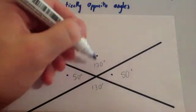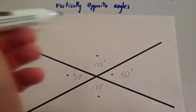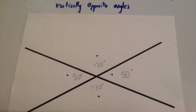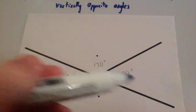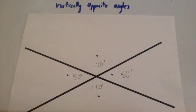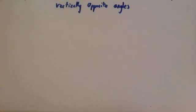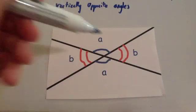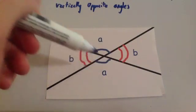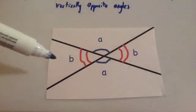These angles that are opposite each other are also equal. So vertically opposite angles mean that whenever you've got two lines that intersect or cross each other, the opposite angles will be equal to each other. This diagram shows it quite well. So if you've got two lines that intersect, the opposite angles are equal — A equals A and B equals B.